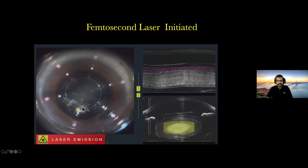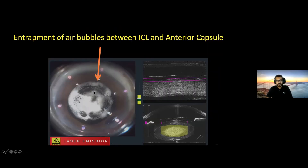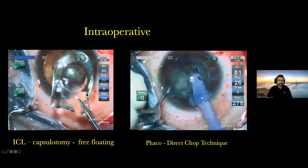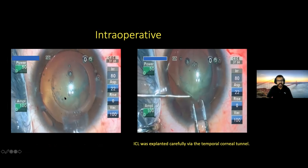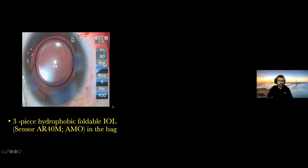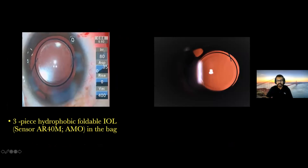The femtosecond laser was initiated and intralenticular bubbles were observed. There was an entrapment of air bubbles between the ICL and the anterior lens capsule — a very interesting finding noted during this case. Intraoperatively, the capsulorrhexis flap was free-floating. With careful entry of the anterior chamber using a spatula, then forceps and a side port, we carefully lifted the ICL, folded, and removed it. Notably, the nucleus did not have any fragmentation by the laser, so we continued with a phaco direct chop technique. The lens was well placed in the bag using a three-piece hydrophobic foldable IOL with a sensor AR platform — well-centered with a good capsulorrhexis and no complications.